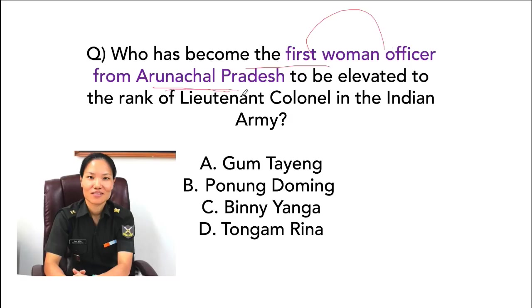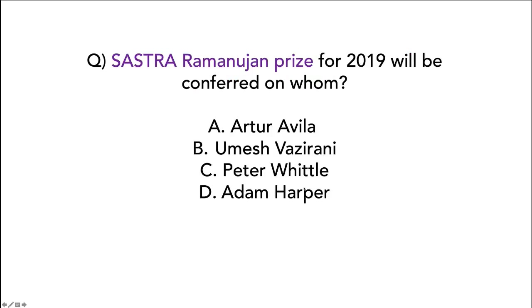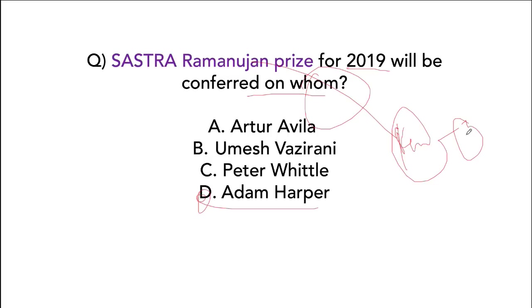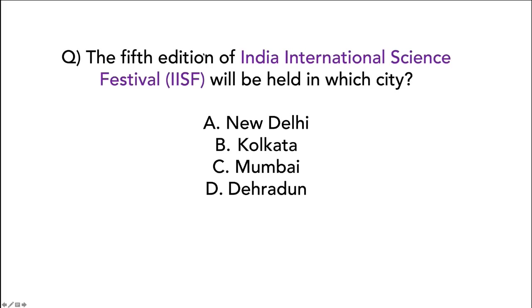Ponung Doming has become the first woman from Arunachal Pradesh to be elevated to the rank of Lieutenant Colonel in the Indian Army. The Srinivasa Ramanujan Prize for 2019 will be conferred on mathematician Adam Harper. Ramanujan was born in Kumbakonam, Tamil Nadu. The fifth edition of India International Science Festival will be held in Kolkata.